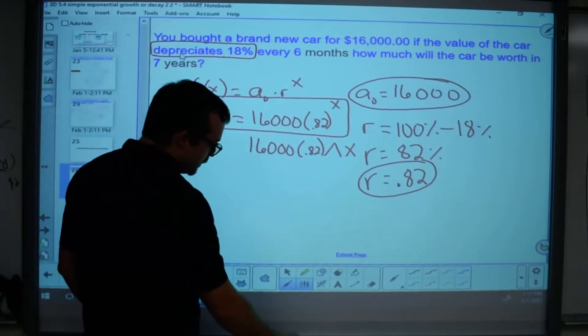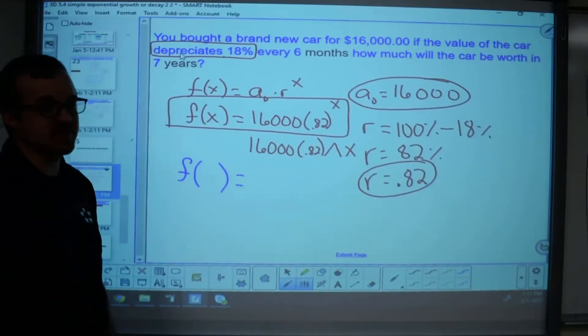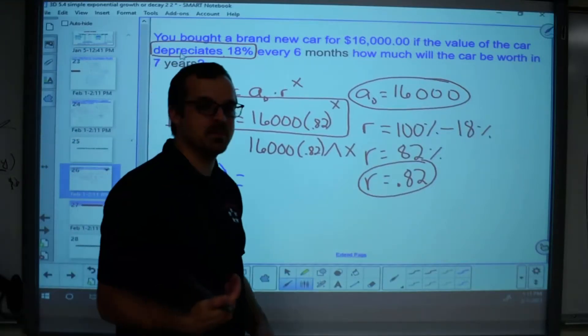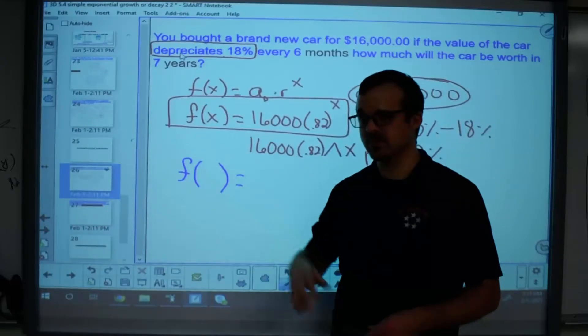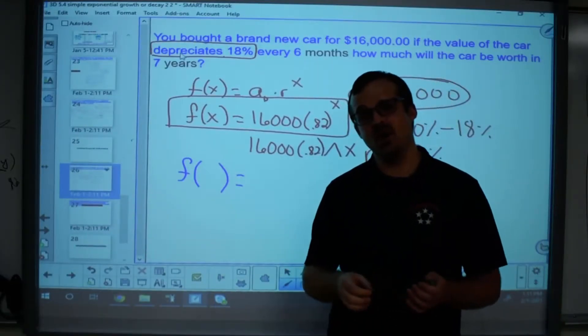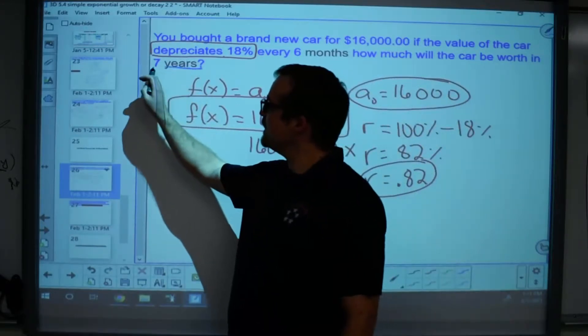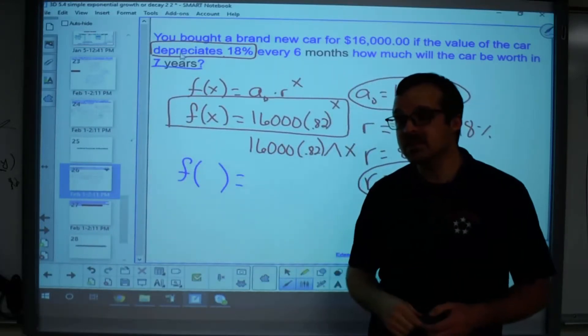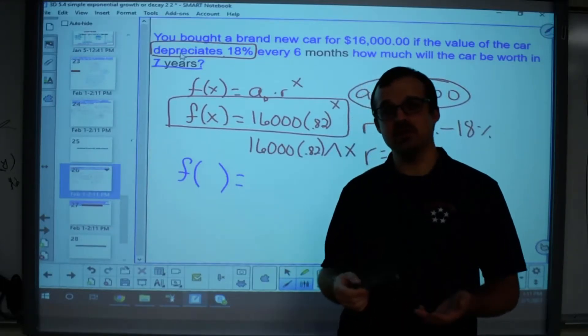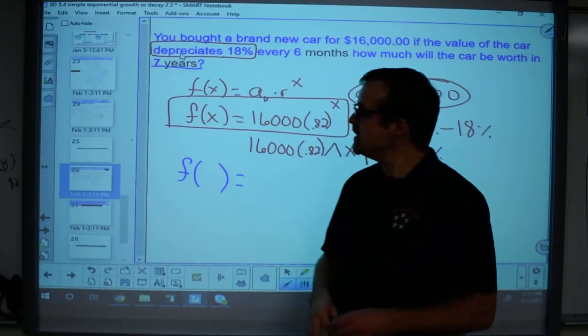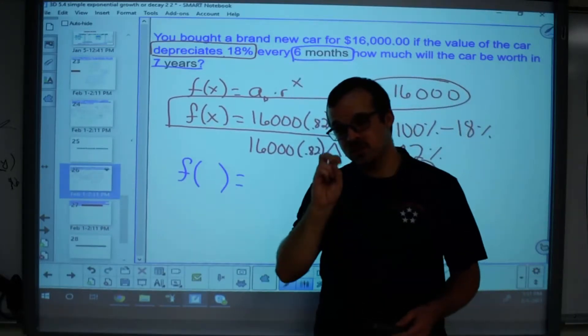Now, we need to use that to figure out how much my car is worth. The question is, what is x going to be? Remember, x is the number of times that the time interval passes. In this case, x is going to be the number of times that my car depreciates. It says how much is it worth in seven years. The problem is, x isn't seven. X is not seven because this car doesn't depreciate seven times. It depreciates every six months. Every six months is twice a year, right?